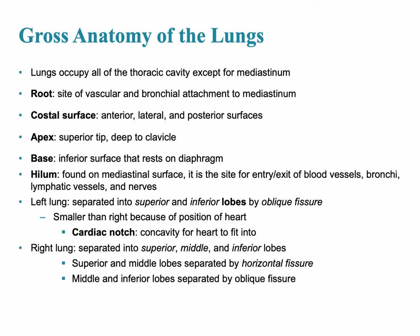The lungs occupy the large majority of the thoracic cavity, except for the mediastinum, which is where the heart is located. The root of the lungs is where the vascular and bronchial attachment is to the mediastinum. The costal surface refers to the ribs, and it includes the anterior, the lateral, and also the posterior surfaces.